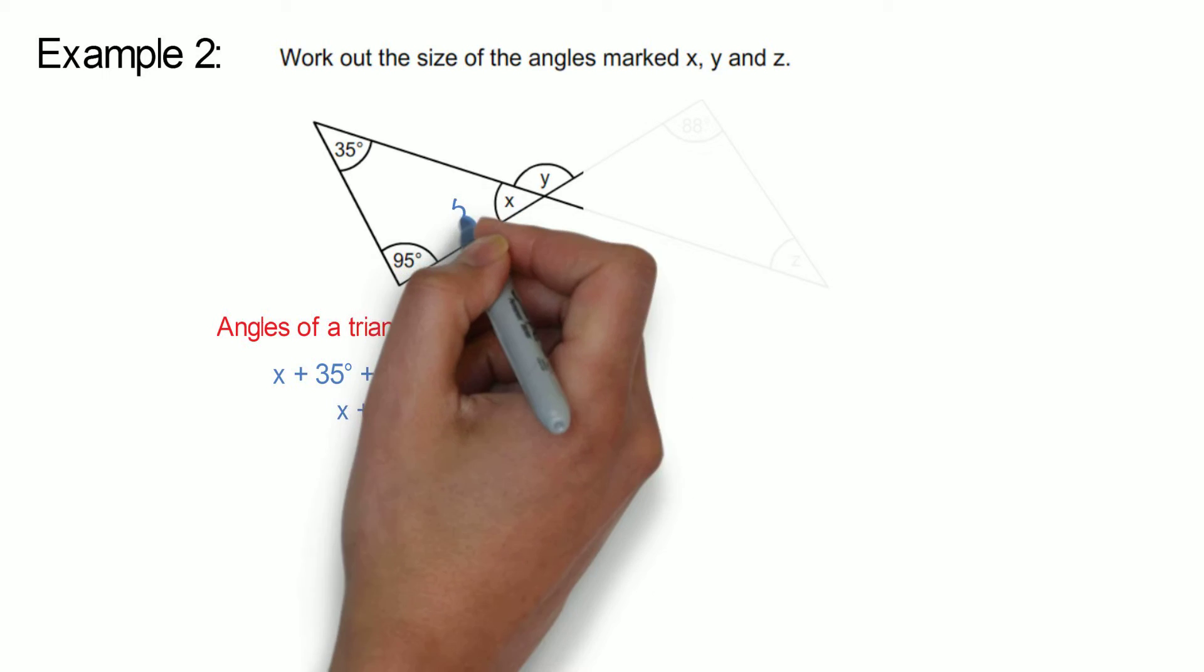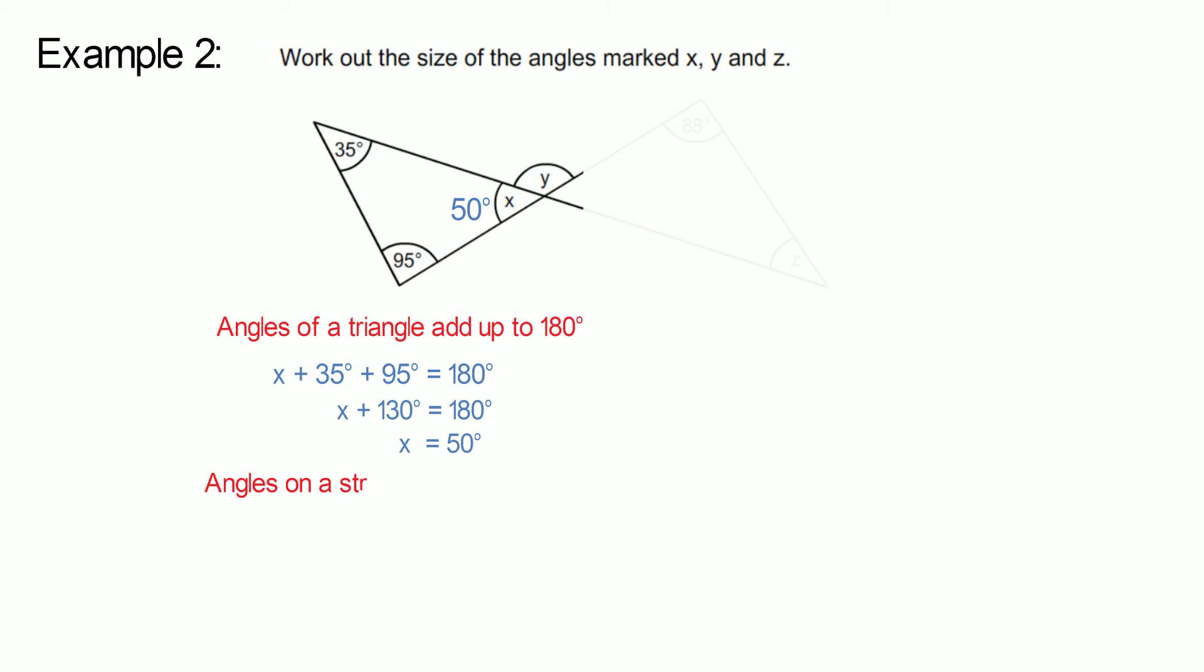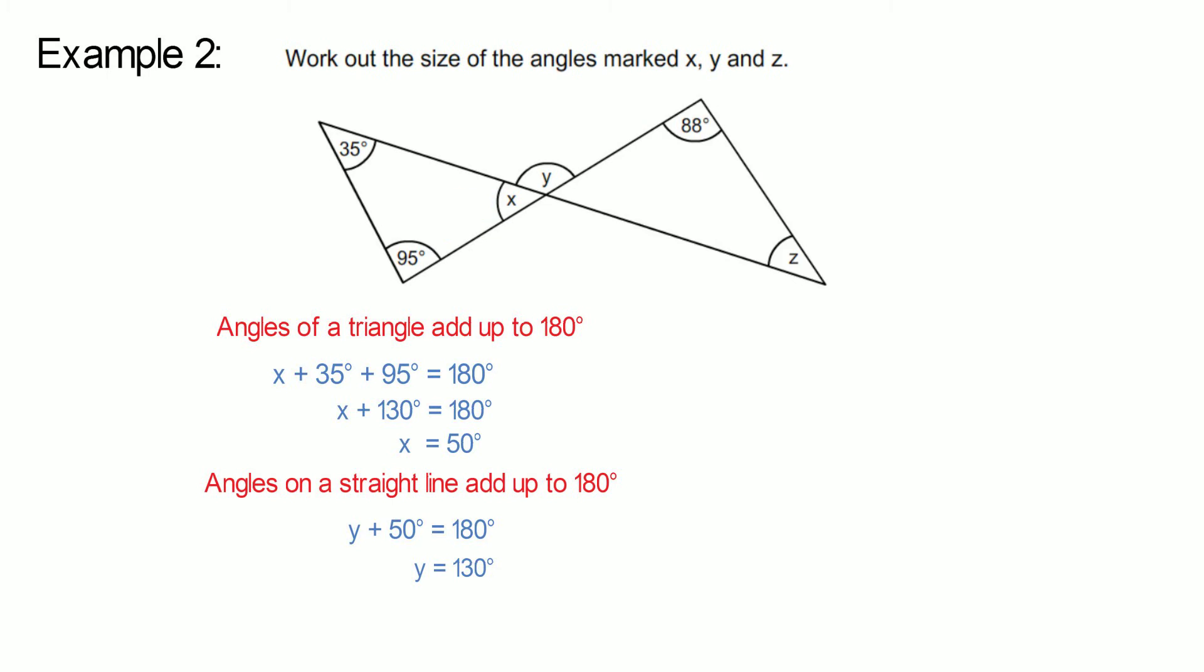To work out the value of Y, we can use the fact that angles on a straight line add up to 180 degrees. So Y plus 50 degrees equals 180 degrees. Therefore, Y equals 130 degrees.